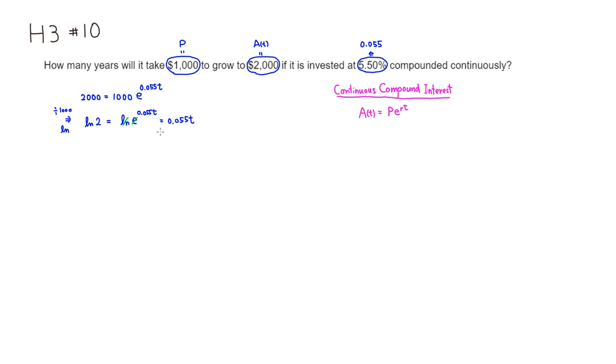And what we're looking for is t, so we need to get rid of 0.055. So we can just simply divide through by 0.055.